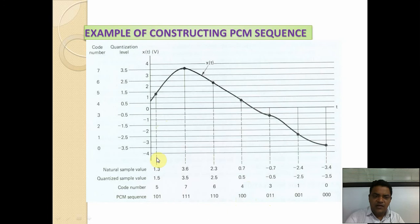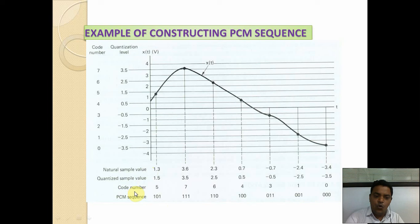Plus 1.5 is code number 5, giving PCM sequence 1 0 1. In this way, whatever the natural sample value is quantized and assigned a specified code number, it is then converted into the PCM sequence. This is how the construction of the PCM sequence is obtained.